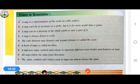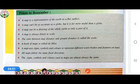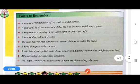The ratio between map distance and ground distance is called the scale. The map uses signs, symbols, and colors to represent different water bodies and features on land. All maps follow the same fixed directions.